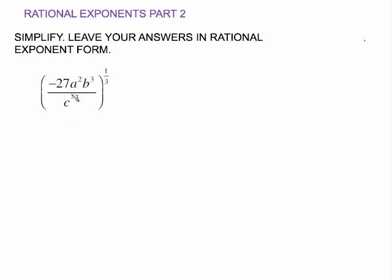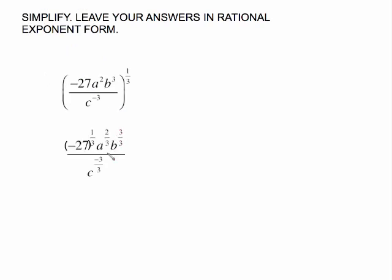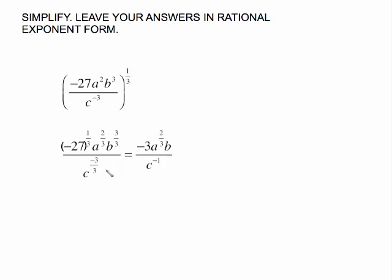To do negative 27 a squared b cubed c to the negative three, all raised to the one-third, we use the exponent law that says when you raise a power to a power you multiply the exponents. However, we have to deal with the coefficient — we have to raise negative 27 to the one-third power also. So this is everything written out distributed: negative 27 in parentheses to the one-third. Then multiply two times one-third gives us two-thirds. Three times one-third gives us three-thirds, and negative three times one-third is negative three-thirds, and we'll clean that up.